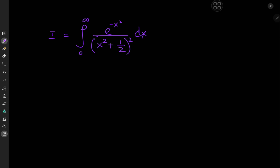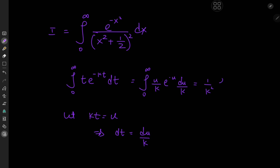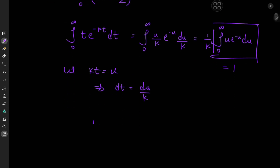You can do this for 1 over k to the n as well, and the trick is to take the integral from 0 to infinity of t times e to the negative k times t, dt. All it takes is one substitution — letting k times t, the argument of the exponential, equal to another variable u. This implies dt equals du over k. So we get the integral from 0 to infinity of u over k times e to the negative u, du over k, giving us 1 over k squared times the integral from 0 to infinity of u times e to the negative u du. This integral evaluates to 1 after integration by parts, so 1 over k squared equals the integral from 0 to infinity of t times e to the negative k times t dt.